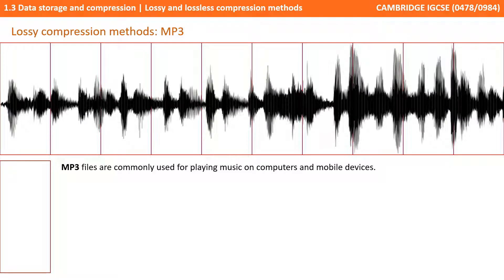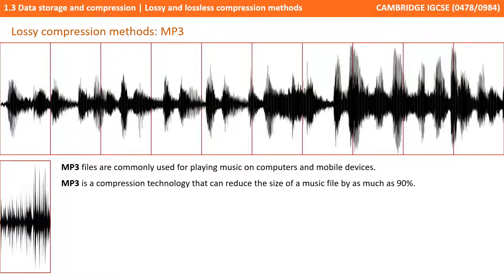The MP3 file format is commonly used for playing music on computers and mobile devices, and it's a lossy compression method. MP3 compression technology can reduce the size of a music file by as much as 90% while still retaining a lot of the audio quality.